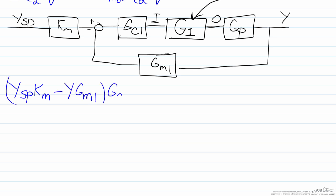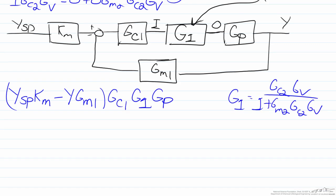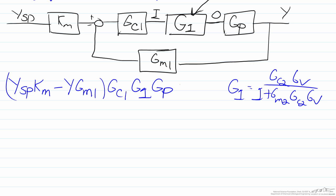We will have ysp times Km minus y times Gm1. These will both get multiplied by Gc1 G1 Gp. So after multiplying by all of these we will get to this point here, which will just be y.